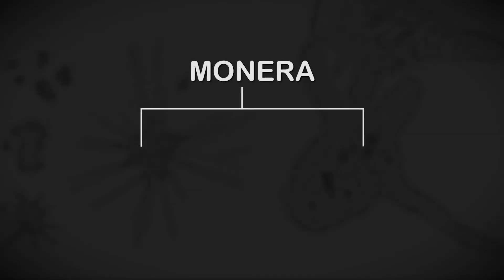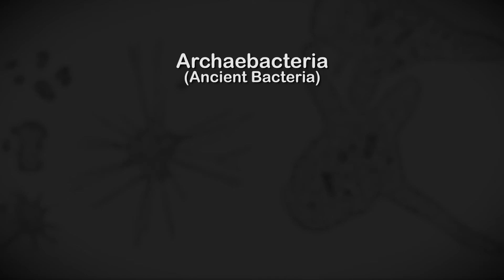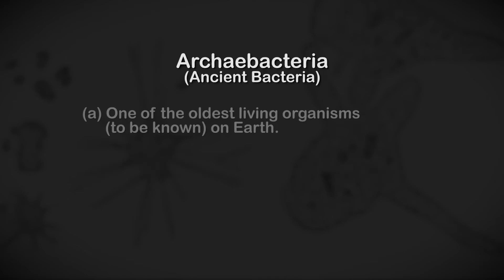Monera is further divided into Archaebacteria and Eubacteria. Eubacteria is true bacteria, while Archaebacteria is ancient bacteria. These bacteria are one of the oldest living organisms known on Earth, and are also called ancient bacteria.